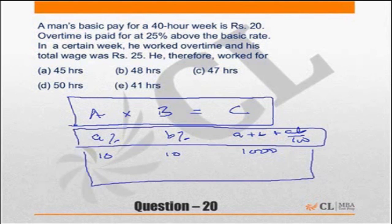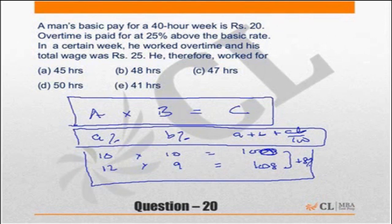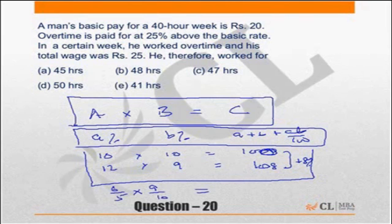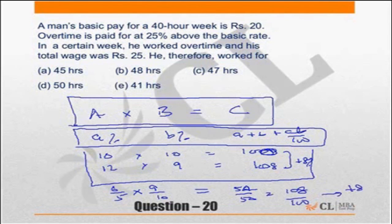If A goes up by 20%, it becomes 12. B goes down by 10%, it becomes 9. The new value will become 12 × 9 = 108, which is +8%. This means if the older value was 100, the final value is 108. The third method uses ratios: if A increases by 20%, it becomes 12/10 or 6/5 times; if B reduces by 10%, it becomes 9/10 times. The final value becomes (6/5) × (9/10) = 54/50 = 108/100, which is +8%.